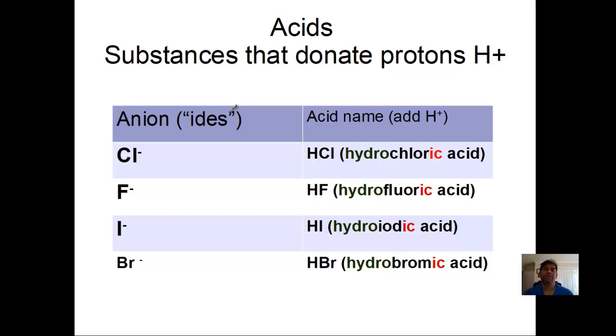In this video, we will go over the nomenclature of acids. Acids are substances that donate protons. When H is an ion, H+, we call that a proton. Acids can freely give away that H+. Some acids can give away more than one proton. We call that diprotic if it can give away two protons, triprotic if it can give away three protons, and so on.